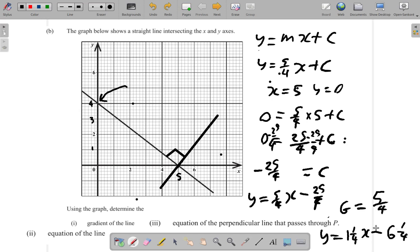Y is equal to 1 and a quarter X minus 6 and a quarter. You could also write it as Y equal 1.25X minus 6.25 as a decimal, alright?